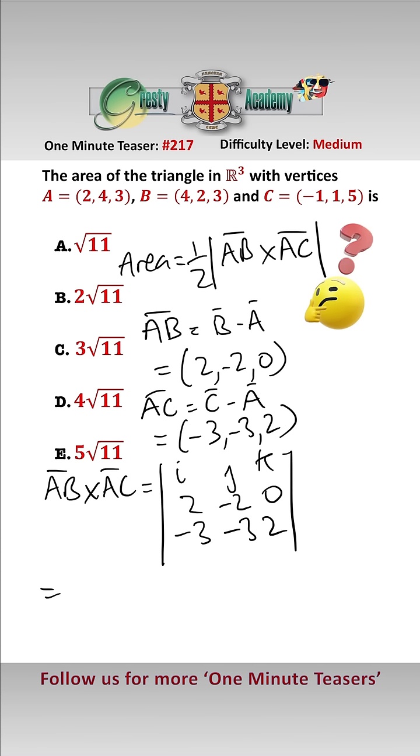And that equals, when we expand it, -4i - 4j - 12k. And the modulus of this is equal to the square root of 4 squared plus 4 squared plus 12 squared, which is root 176, which is root 16 times 11.